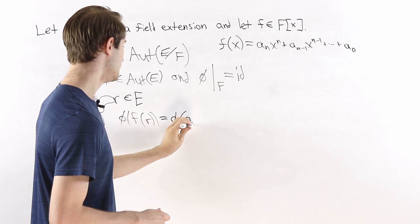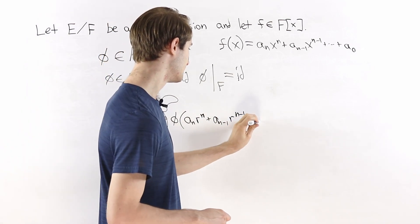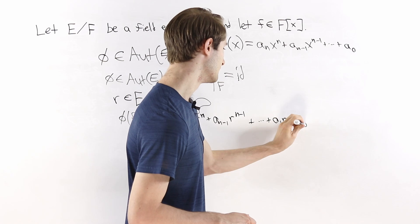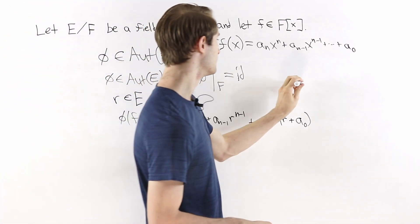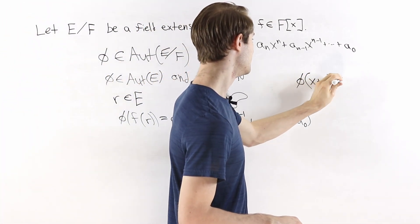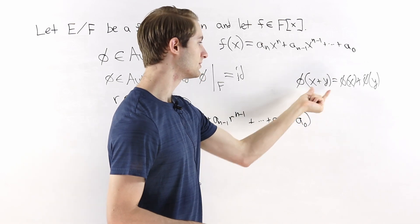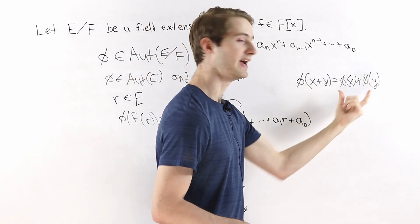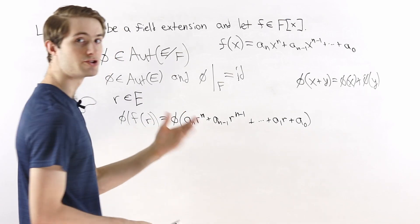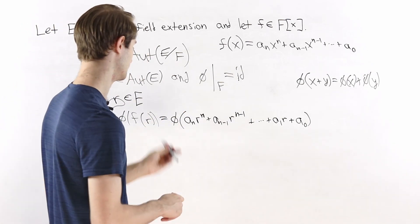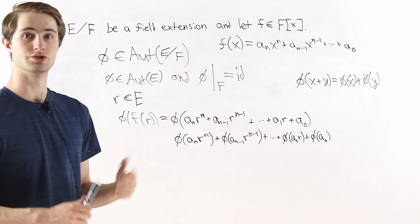So we're looking at phi of the expression: a_n times r to the n, plus a_{n-1} times r to the n minus 1, plus and so on, down to a_1 times r and then a_0. Since phi is an automorphism, in particular it's a homomorphism, and one property of a homomorphism is that phi of x plus y equals phi of x plus phi of y. So since we're adding a bunch of terms, we can split this up and apply phi to each term individually.